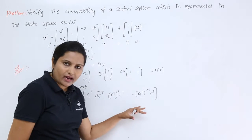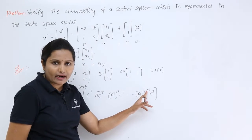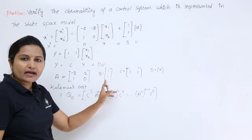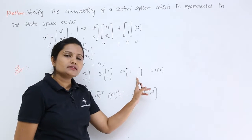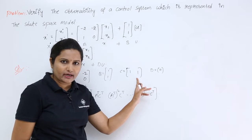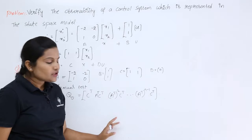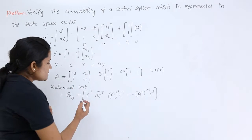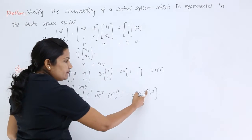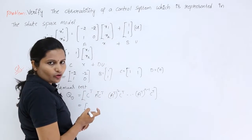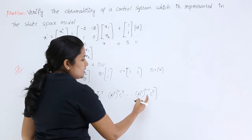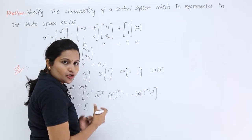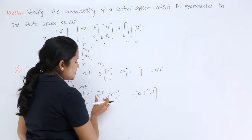The number of terms in this matrix depends on the order of the A matrix. The A matrix is 2×2, meaning n=2. The B matrix is 2×1 (n×1) and C is a 1×2 matrix (1×n). Since n=2, the matrix is limited to two terms — up to A^T·C^T — because the last power is n−1 = 2−1 = 1. So the observability matrix reduces to [C^T, A^T·C^T].